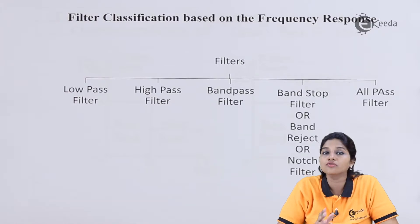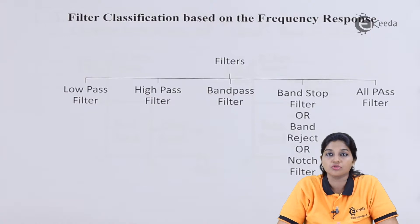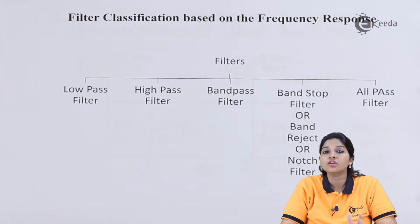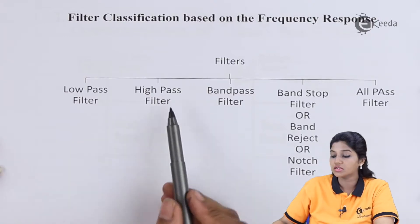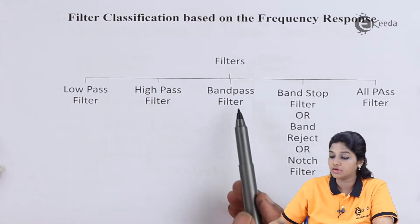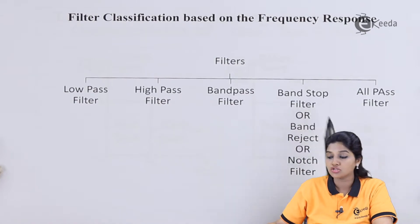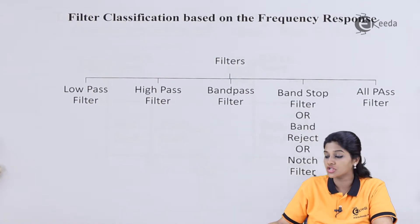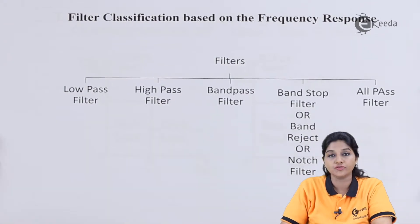Now let's see how the filters get classified on the basis of frequency response. The different types of filters are: low pass filter, high pass filter, band pass filter, band stop, band reject or notch filter, and all pass filter.